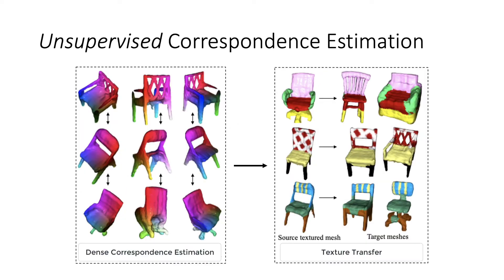So overall, our system can infer both the geometry and the correspondences implicitly. Using the learned correspondences, we can then perform tasks like texture transfer.